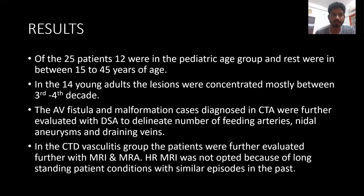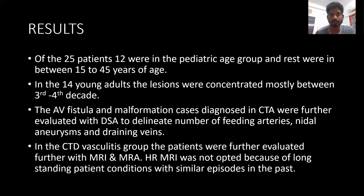Results: of the 26 patients, 12 were in the pediatric age group under 14, and the remaining were young adults. Most of the lesions were seen between the third to fourth decade. Dural fistula and malformation cases were further correlated with DSA to correctly identify the vessels, feeding and draining arteries, and nidal aneurysm size. In the older age group, high-resolution MRI was not opted for patients because of multiple prior episodes.